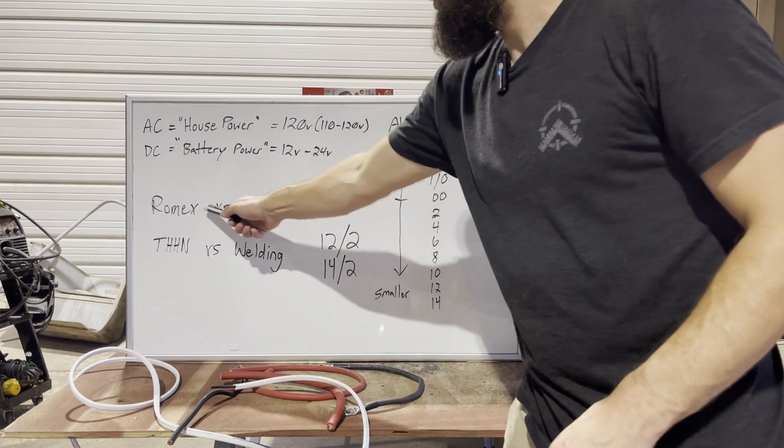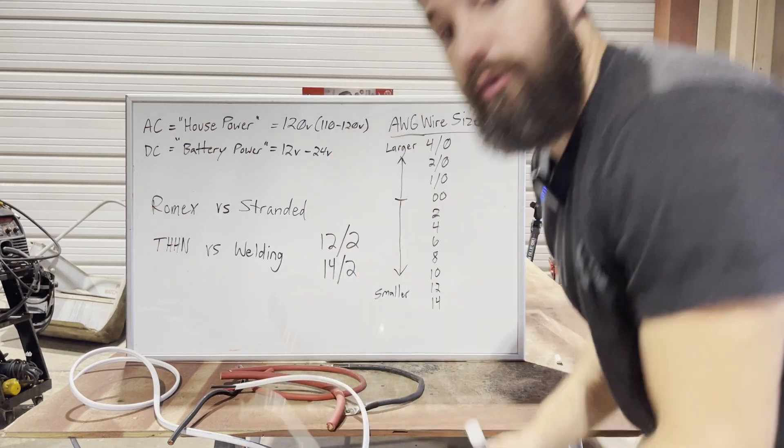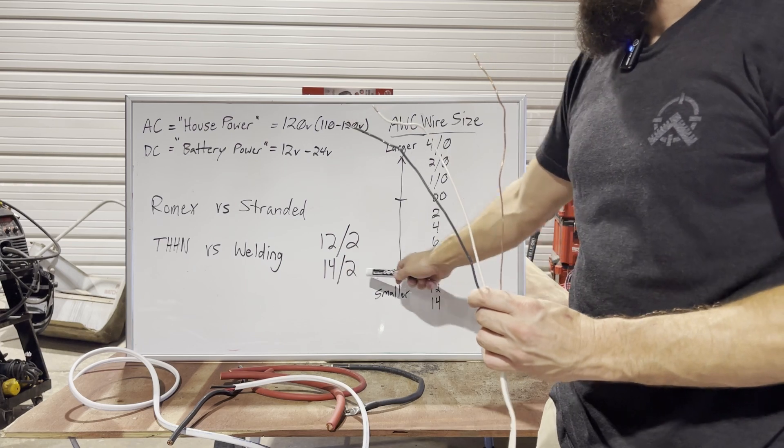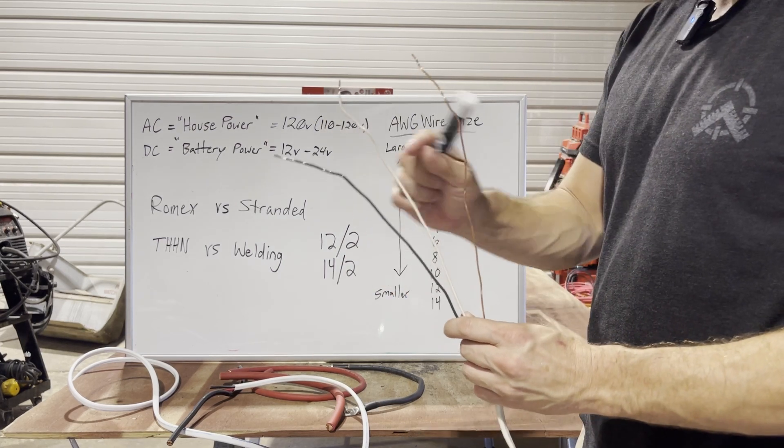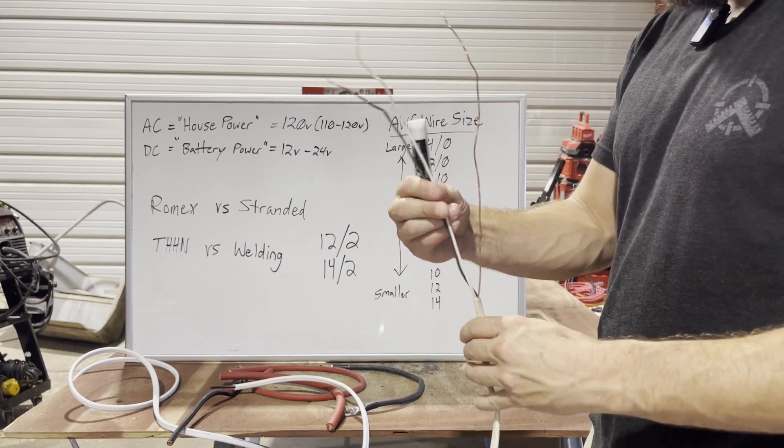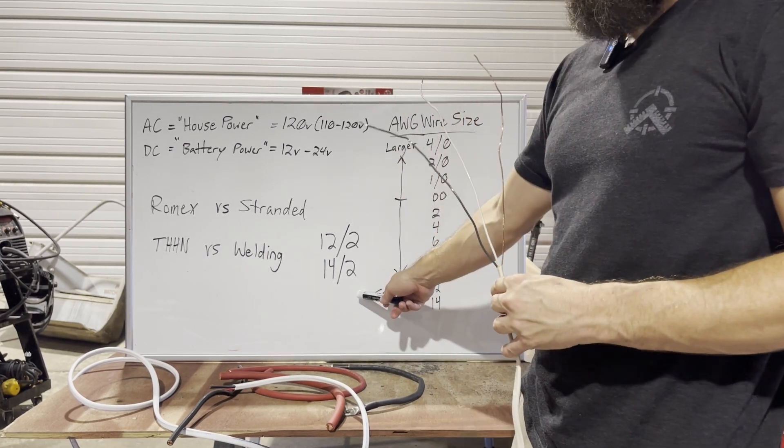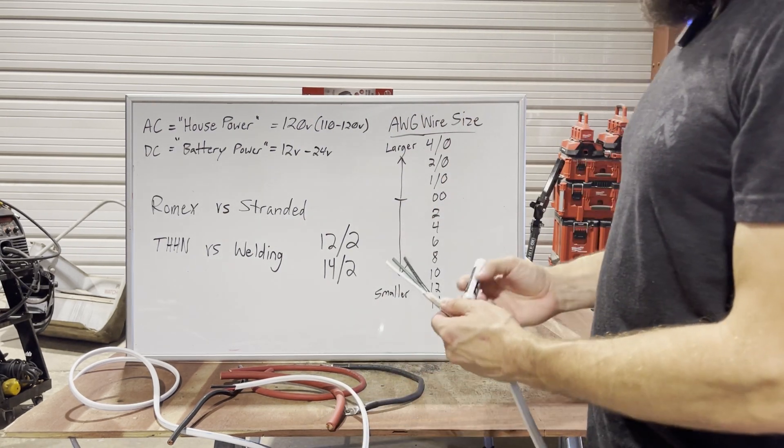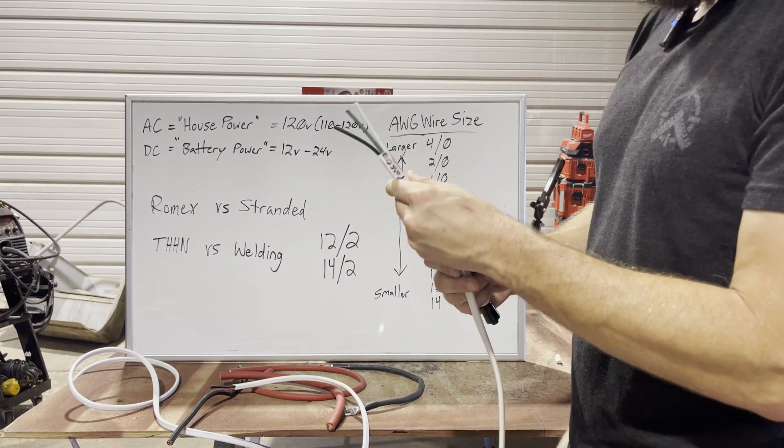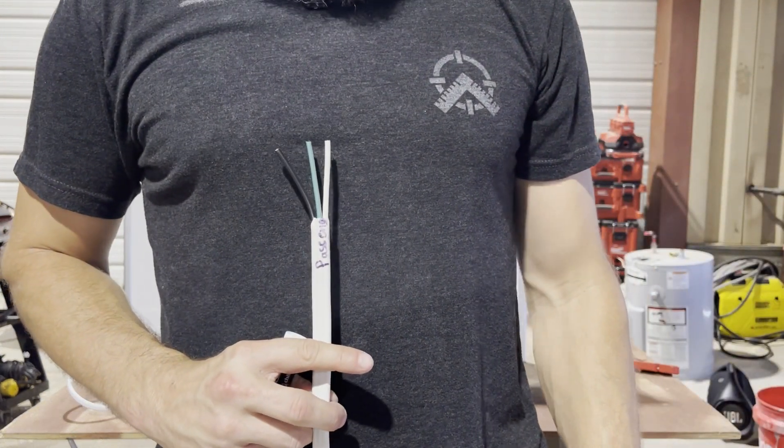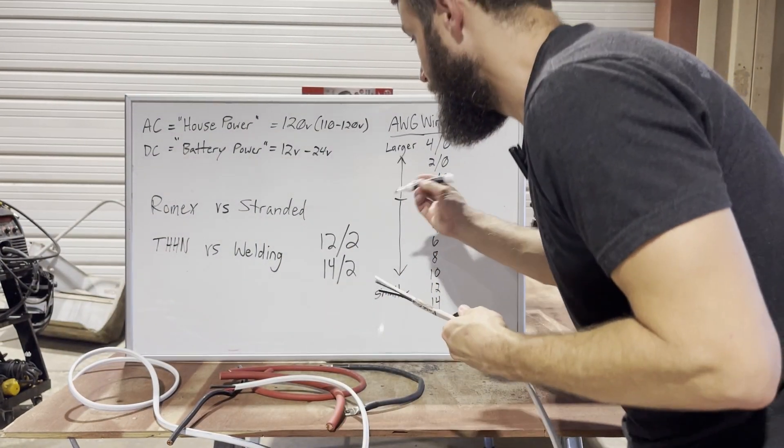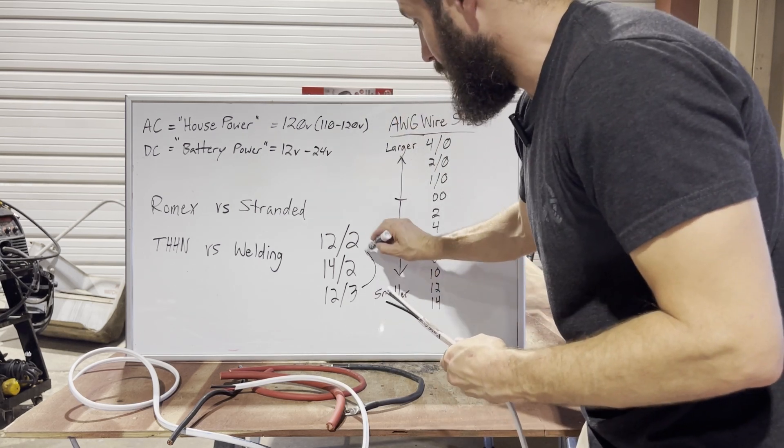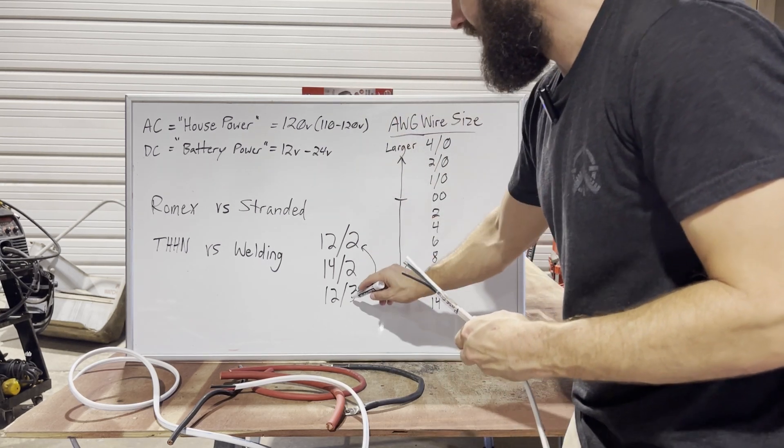But when you get into Romex versus stranded, Romex being your typical residential solid copper like this, this is a 14-2. That's going to be on the smaller wire size for AC power. It is three wires or two wires and a ground. They call this 14-2, 14 being the wire thickness, two being the number of wires, but they're not counting the ground as a wire. When you get into stranded, the Marine stranded like this, you're looking at three wires. They're counting the ground as one.